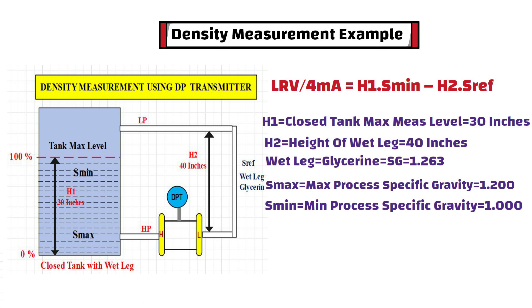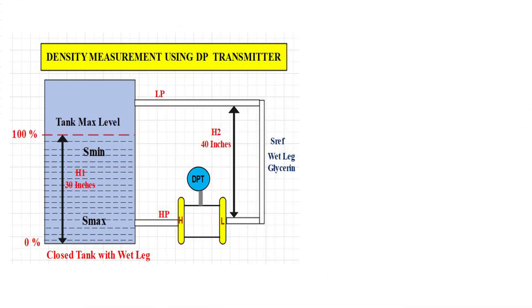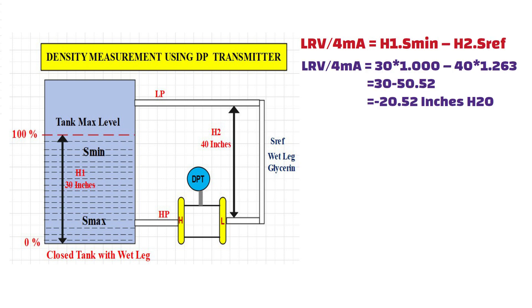Now, let's put all these values into the equation and do the simple math calculation. As you can see, when we put all these values into the equation, we get minus 20.52 inches H2O, which is our lower range value for this DP transmitter in this example.